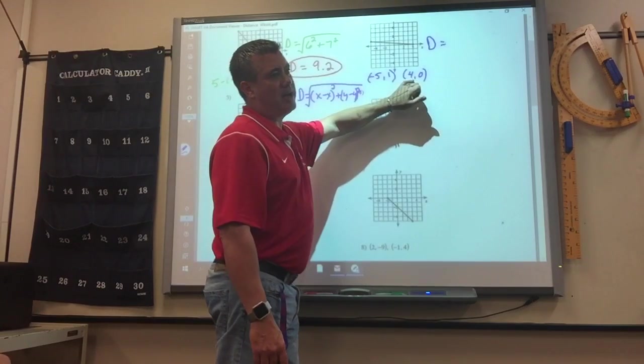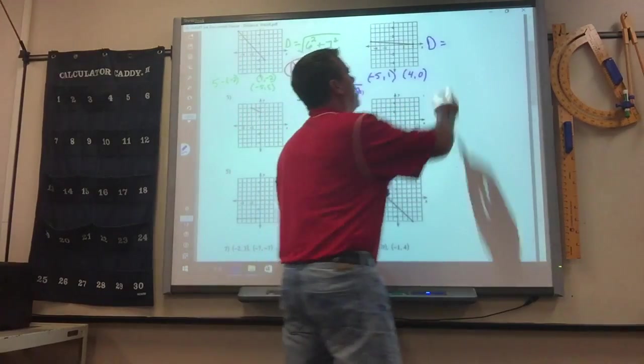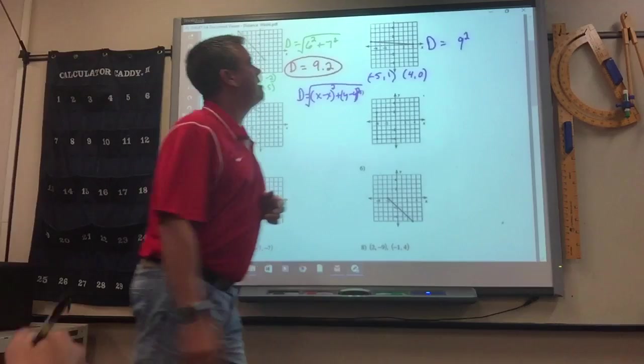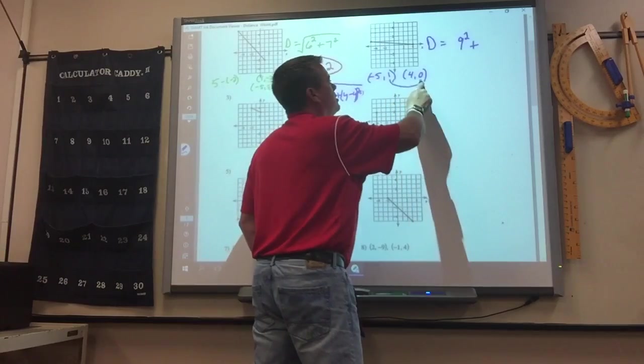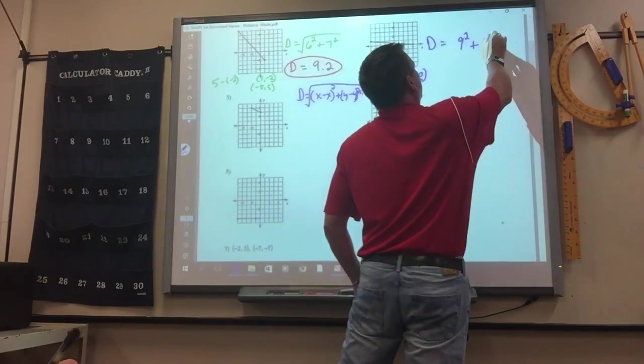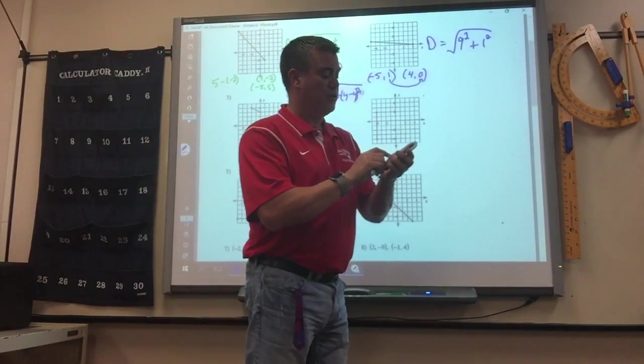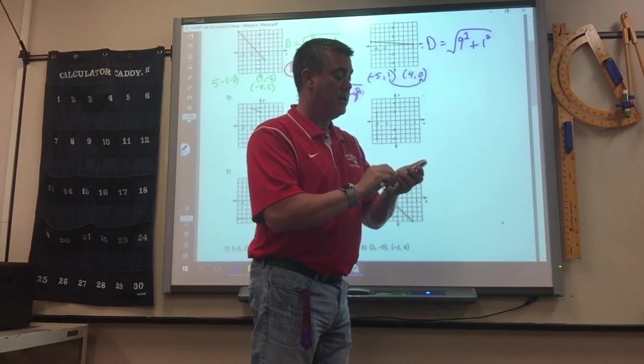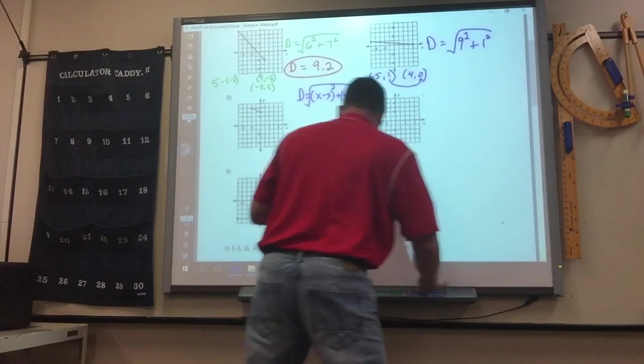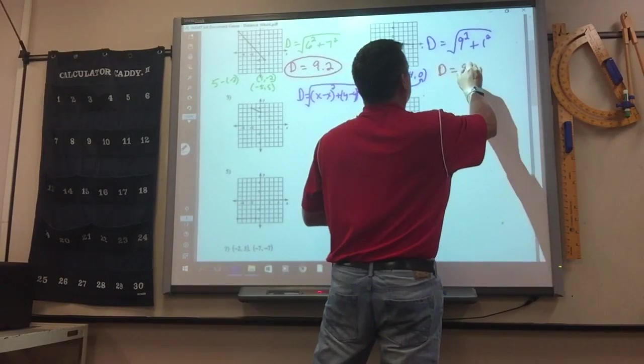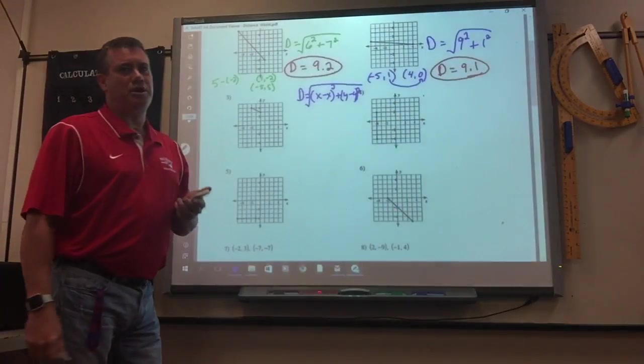Negative 5 take away 4 is negative 9, but remember if you get a negative, you should turn it into a positive. You should drop it off because it's going to turn positive anyway. Plus y minus y, 1 take away 0 is 1 squared, and then you square root it. On the smaller calculators you got to do the inside first, 9 squared plus 1 squared, and then press the square root sign. What does it round to? 9.1, because it's 9.05. So the 0 would round up to 1.